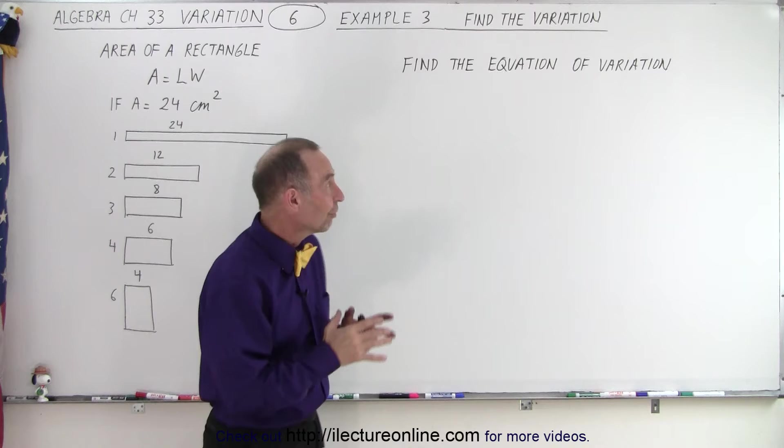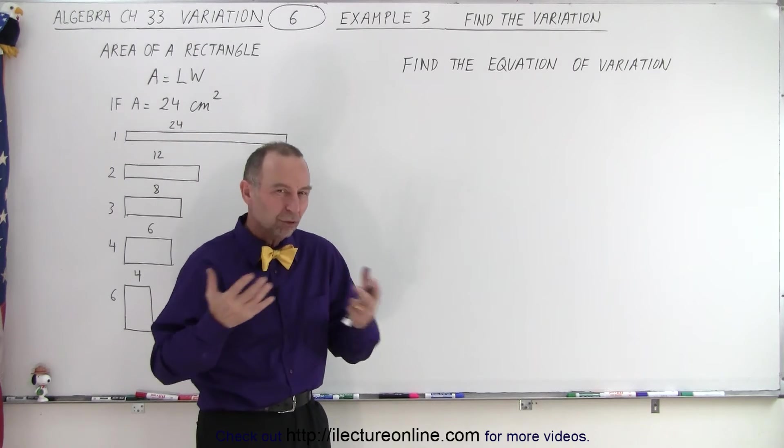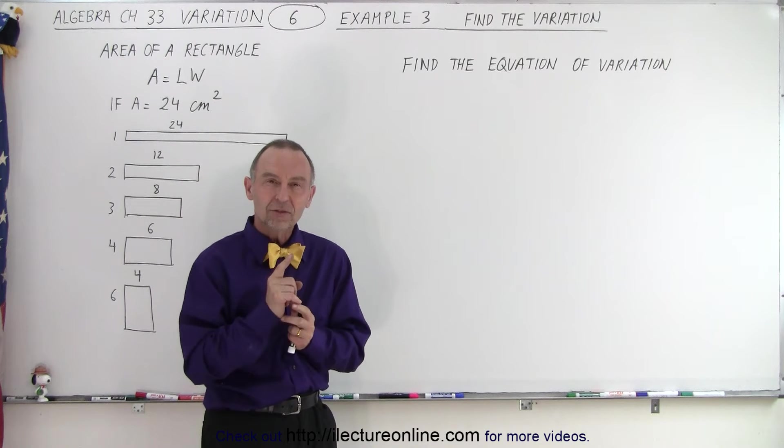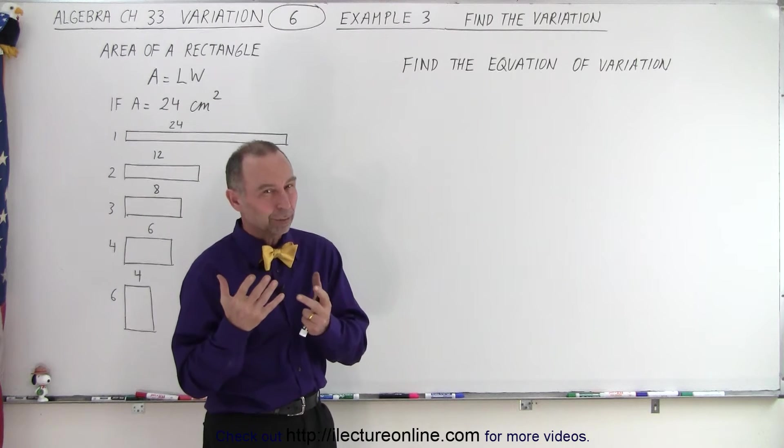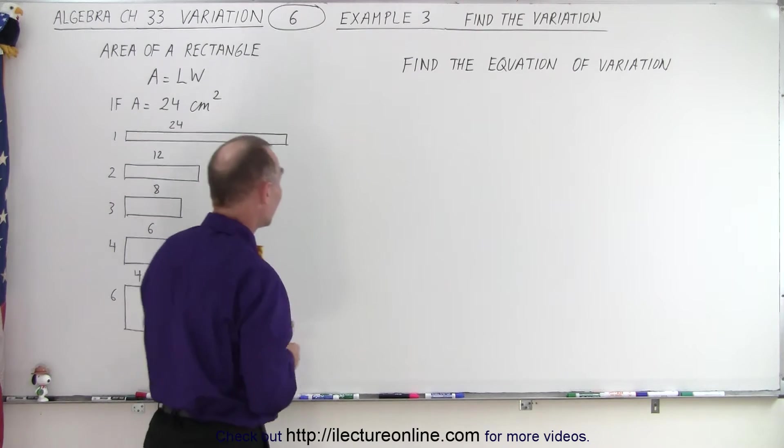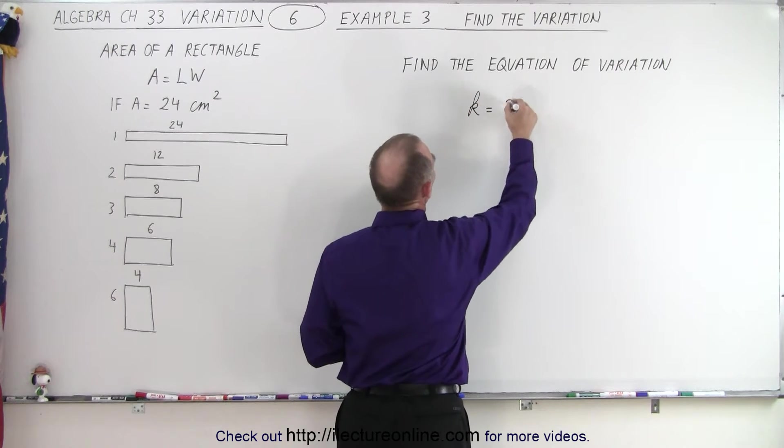So now they're asking us to find an equation that describes that variation, the relation between the length and the width. Well, the one thing that's constant, remember the constant k? It's the area. It's 24. So what we can say here is that k is equal to 24.